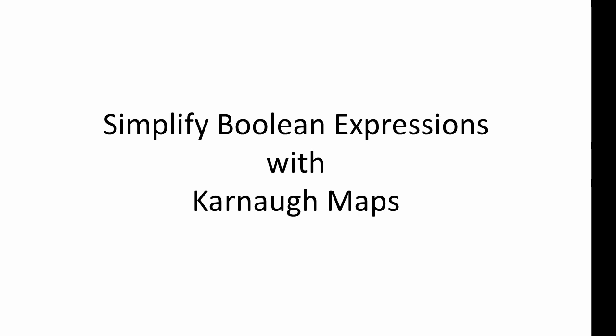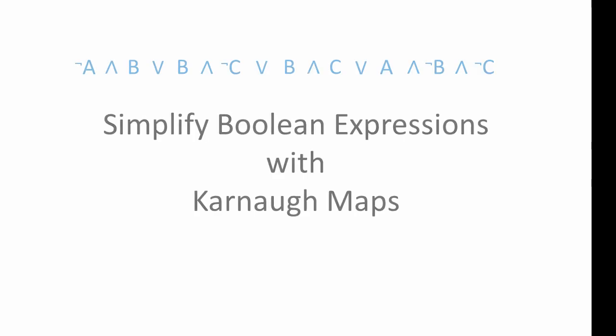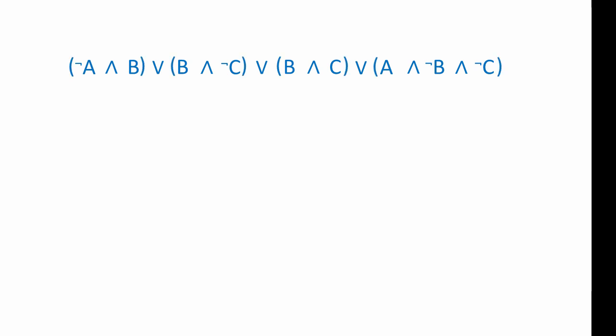Let's see how we can use Karnaugh maps to simplify Boolean expressions. Here's a complex expression that we want to simplify. Before we start, let's put brackets around groups of variables which have been ANDed together. This will make it easier to deal with.